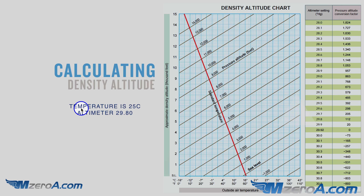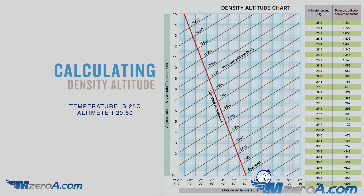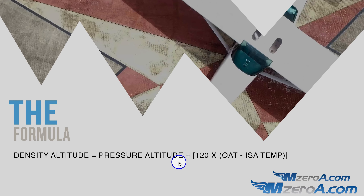Then with a temperature of 25 degrees Celsius — note that Celsius is on one scale and Fahrenheit on another, so don't get confused — I'm looking for 25, which falls between 21 and 27. Coming up and following to sea level, then continuing across, we land somewhere around 1,200 to 1,400 feet density altitude. It's tough to be precise on the chart, but roughly 1,300 feet is where that places us.